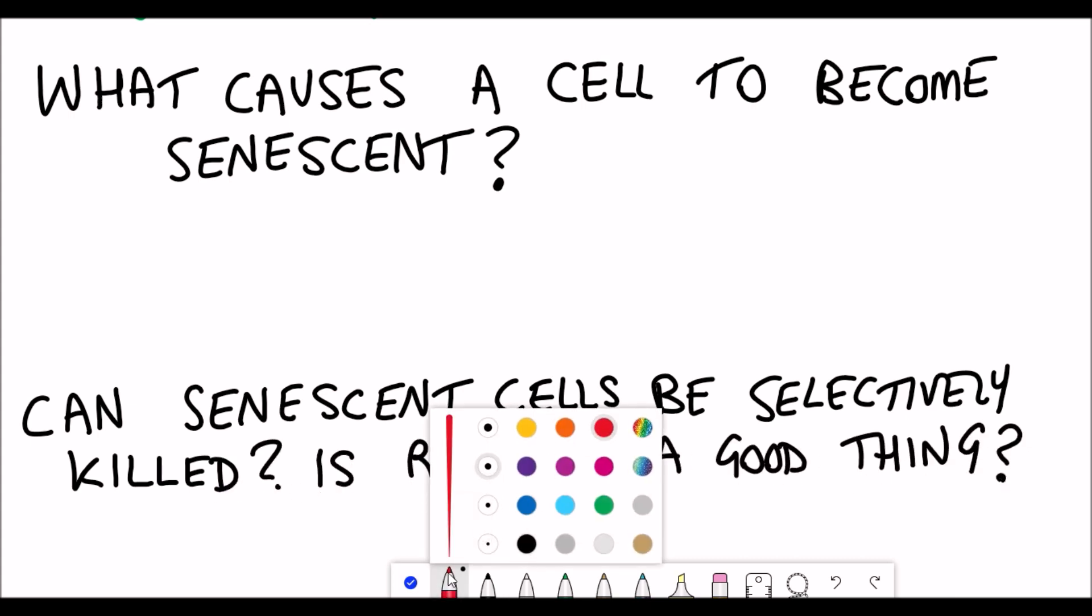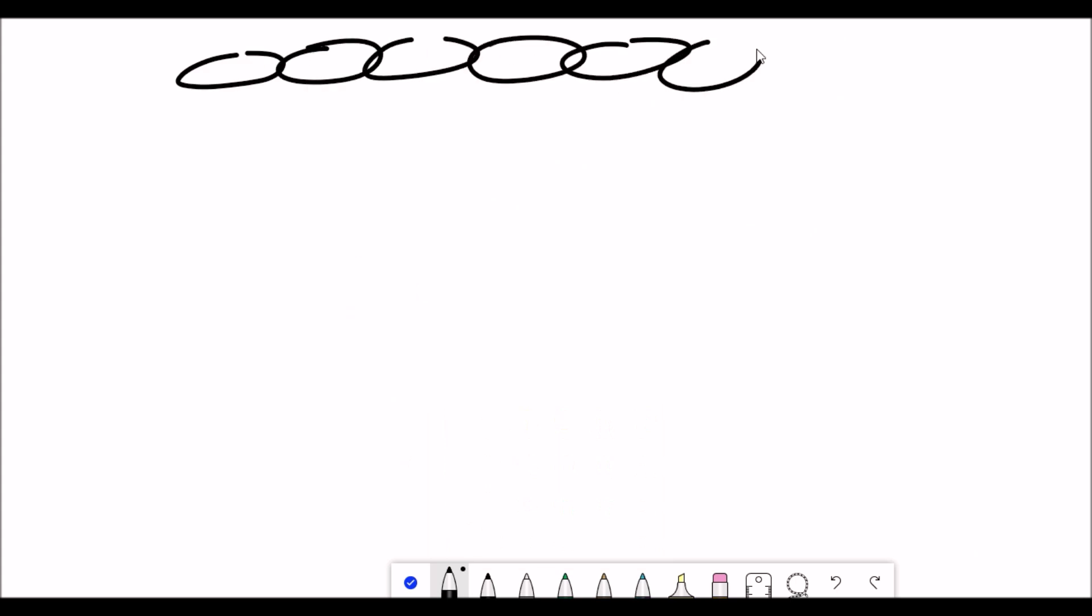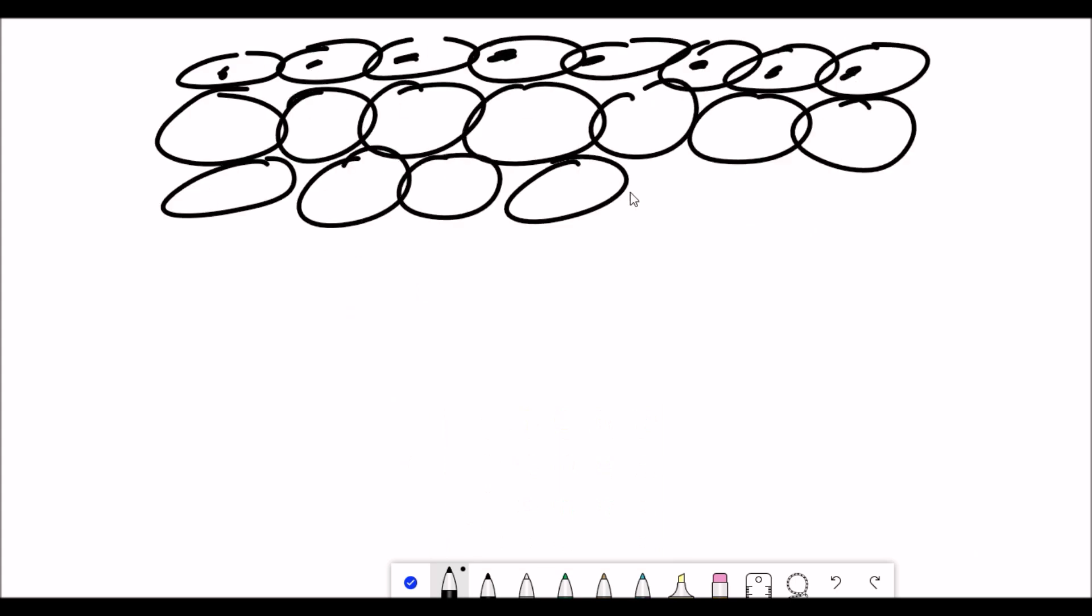It turns out there are actually many different ways that a cell can become senescent, but the one we'll focus on here is DNA damage. In terms of being able to remove senescent cells and effectively kill them, we'll talk briefly about senolytics at the end of the video and how that was used to prevent skin aging.